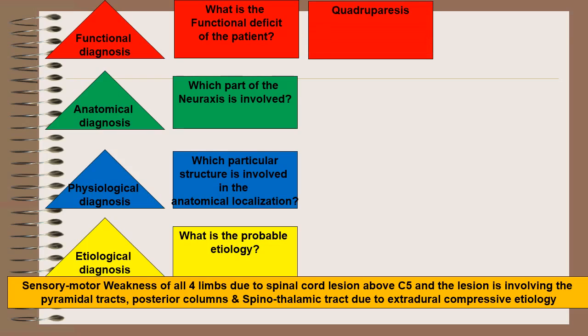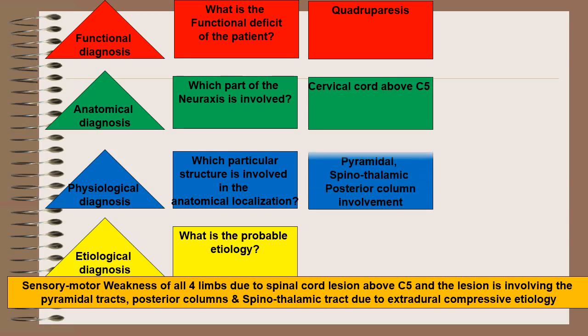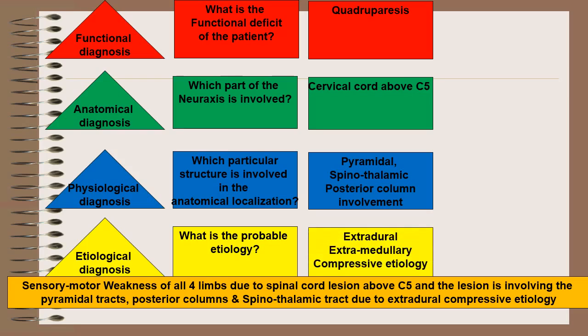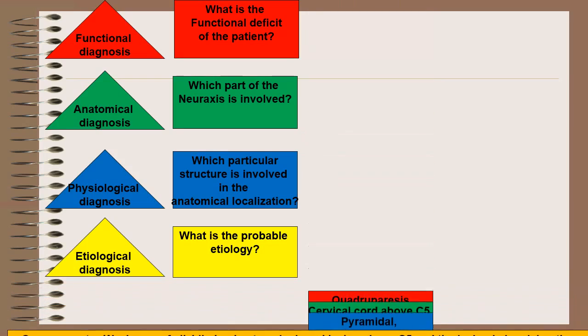The functional diagnosis will be quadriparesis. Anatomical diagnosis will be cervical cord lesion above C5. Physiological diagnosis will be involvement of posterior columns, pyramidal, and spinothalamic tracts. Etiological diagnosis will be extradural extramedullary compressive etiology.